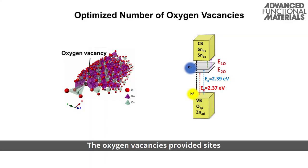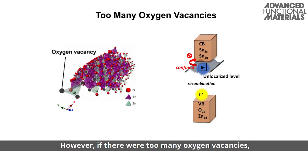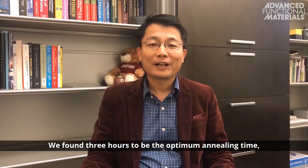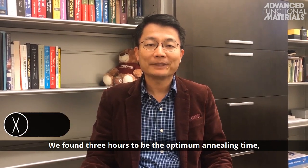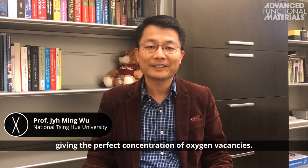The oxygen vacancies provided sites for the reactive intermediates in the hydrogen evolution reaction to extend their lifetime. However, if there were too many oxygen vacancies, unproductive reaction pathways could dominate, lowering catalyst performance. We found three hours to be the optimal annealing time, giving the perfect concentration of oxygen vacancies.